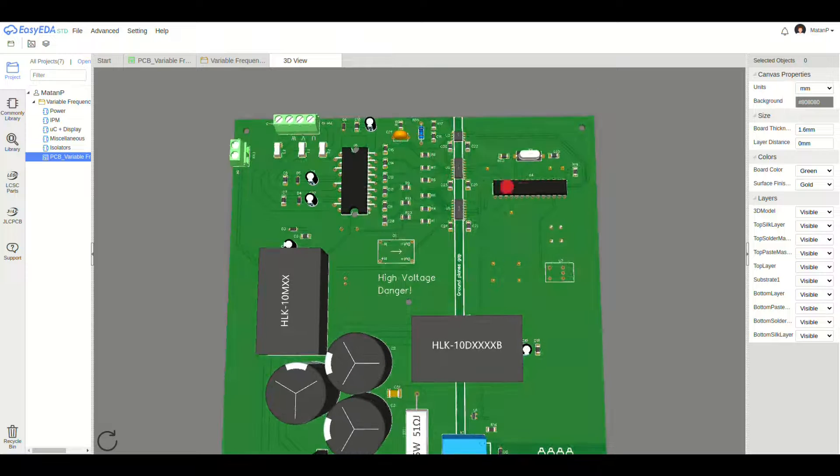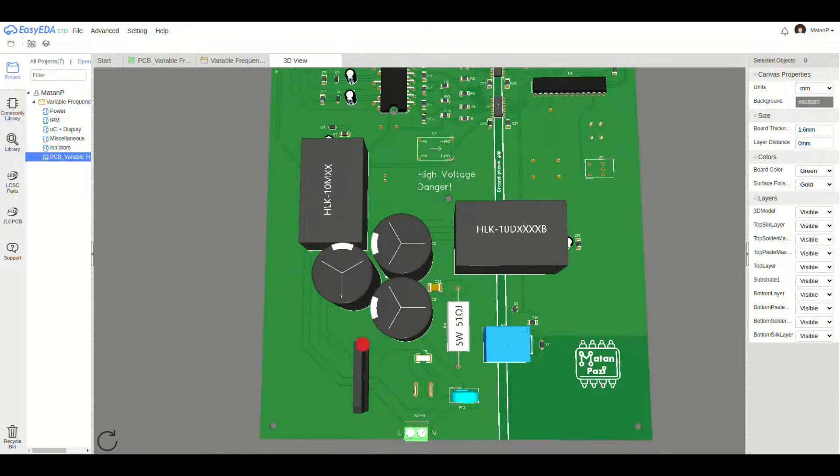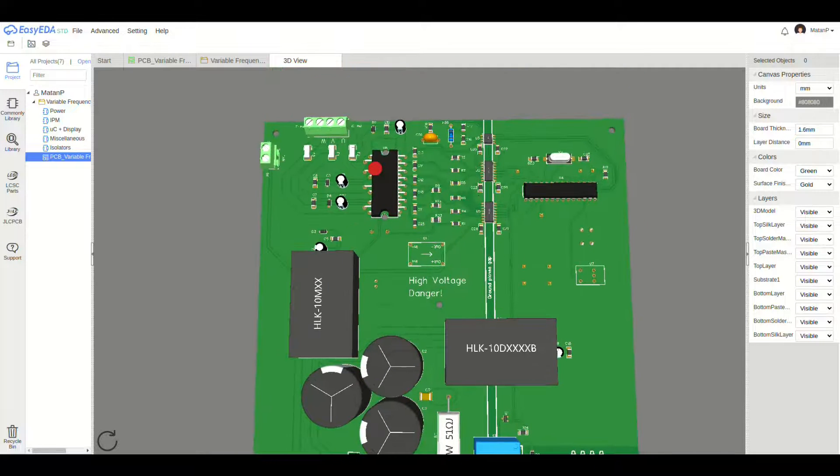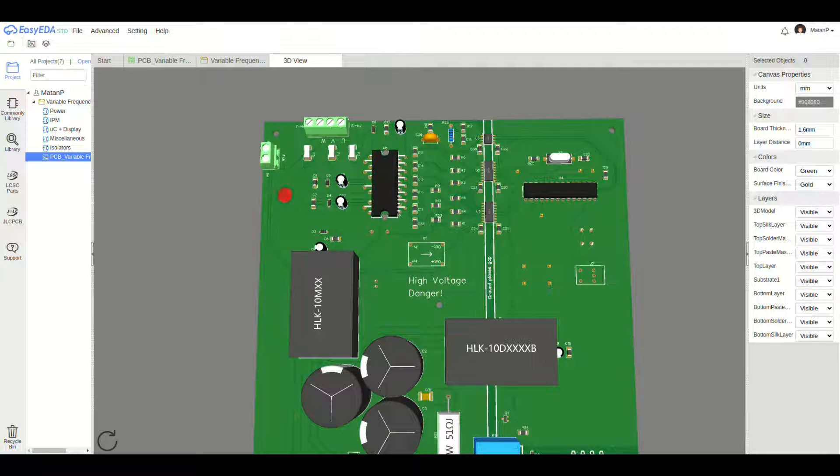The microcontroller sends and receives signals from the high voltage side through these isolators. The high voltage side contains this rectifier and the intelligent power module, along with a few other components.